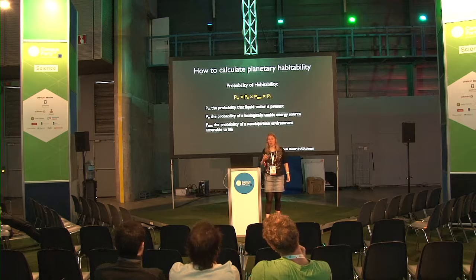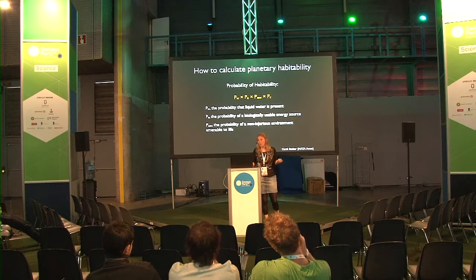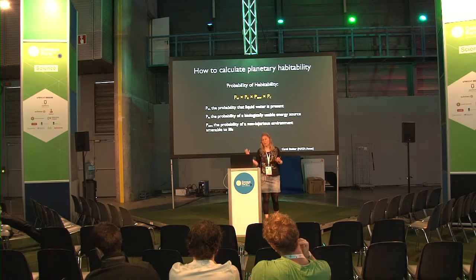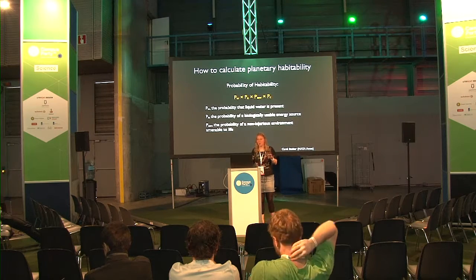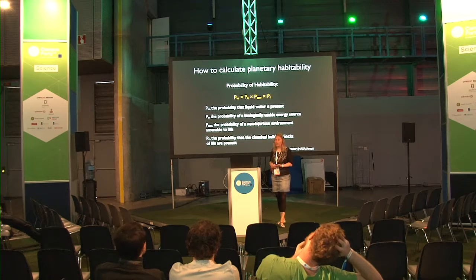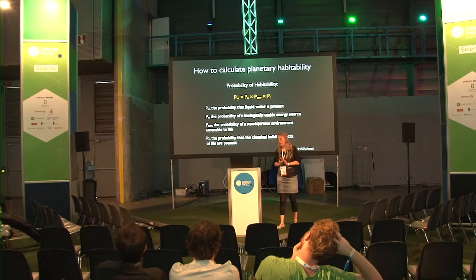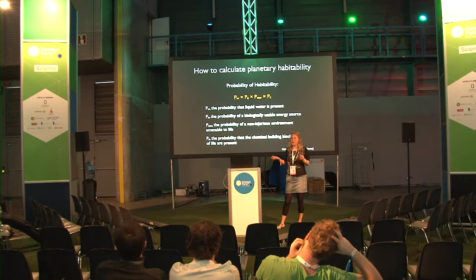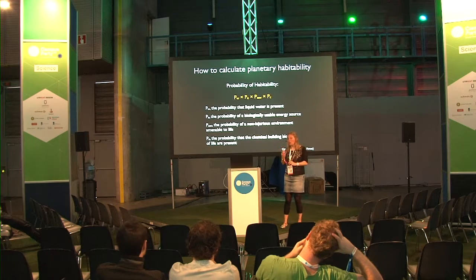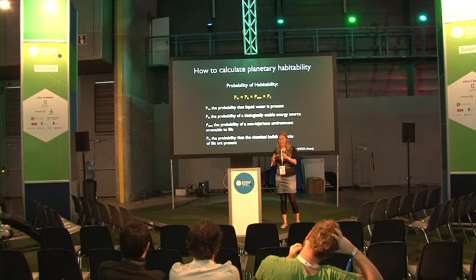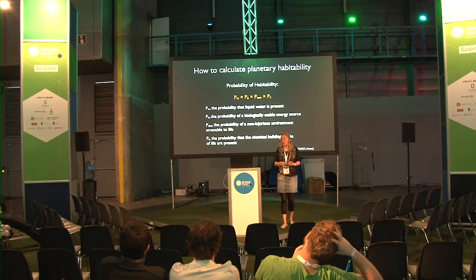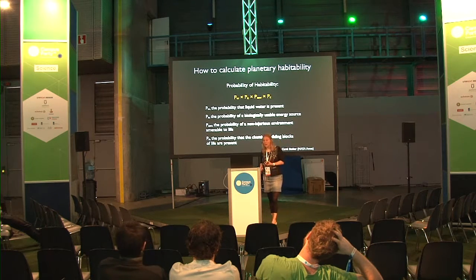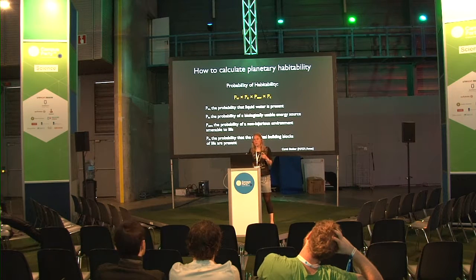You need a non-injurious environment — so no supernovae close by, no gravitational effects of a nearby black hole. You want something where it's nice and quiet for a long time. And then the fourth thing, which is kind of necessary, is the building blocks of life. The question is, what are the building blocks of life? Can you form them in situ, or do they need to be formed in space and then delivered? If you want to build life, you need a basic set of molecules. All life uses amino acids, sugars, and fatty acids, and those molecules — or at least their building blocks — need to be present.